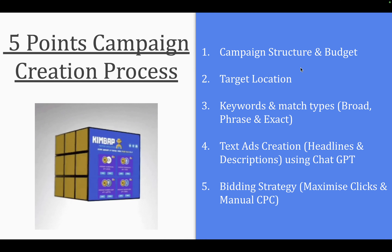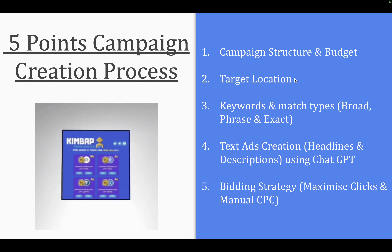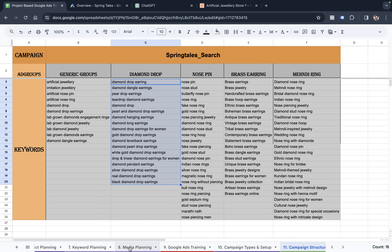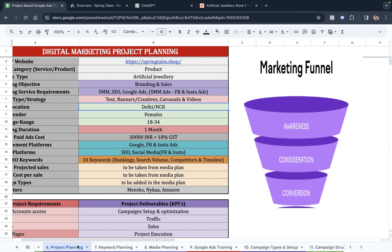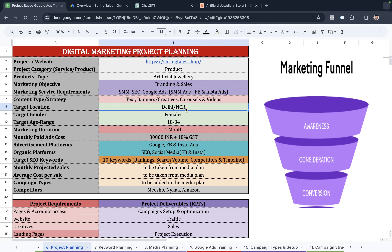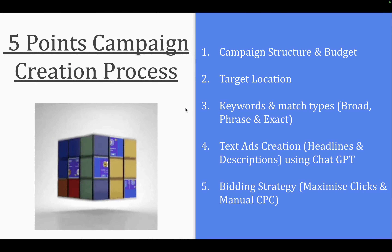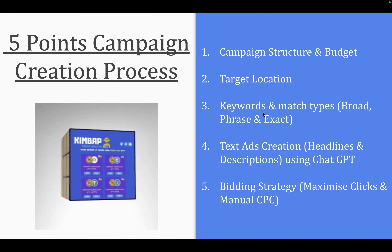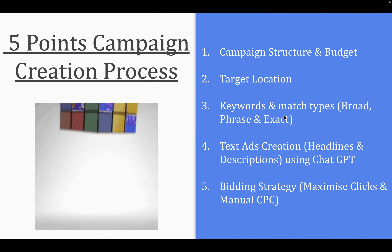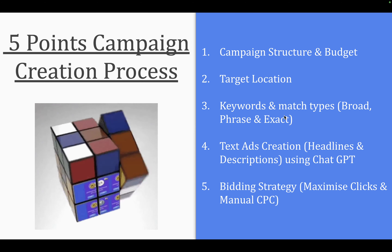Once the campaign structure is set, we have to decide the daily budget and target location. In the media planning sheet, the daily budget for the search campaign is around 6,000 rupees per month, which means 200 rupees a day. The target location was decided in the project planning sheet as Delhi NCR. We also have to add keywords in phrase match, because phrase match makes the most relevant connection with your search terms.